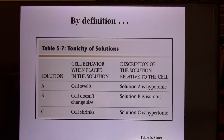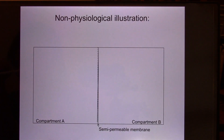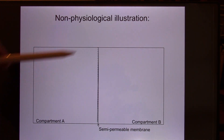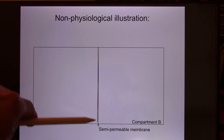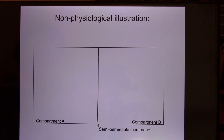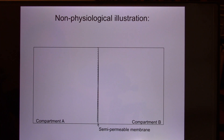Now let's look at how they make the cell swell or shrink. It's based on water movement. Let's talk about a physiology experiment. You create a container and put in an artificial cell membrane — it's become cheaper and cheaper, you can purchase it. It behaves exactly like the cell membrane. It's semi-permeable, so some molecules can move through, others cannot, and you separate them into two areas.